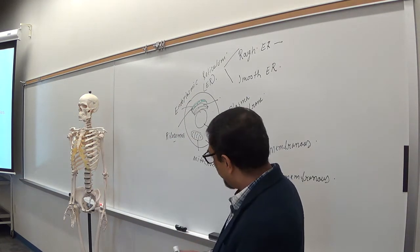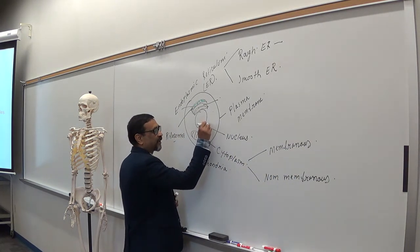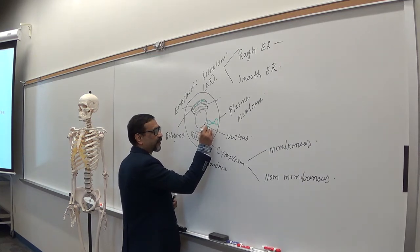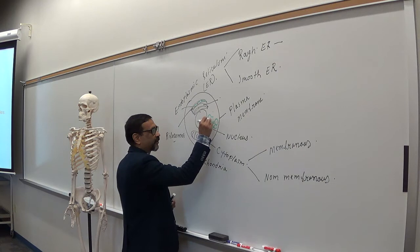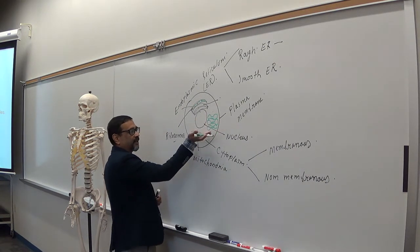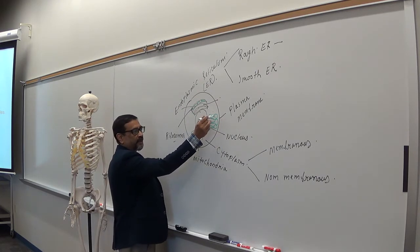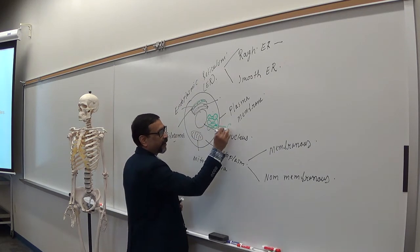You have another important organelle called the Golgi apparatus. If you look at the Golgi apparatus, it is like flattened membranous sacs stuck together one above another. Both ends of those flattened sacs are expanded or wider, and the middle part is narrow. That is the Golgi apparatus.